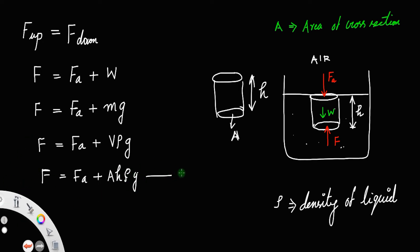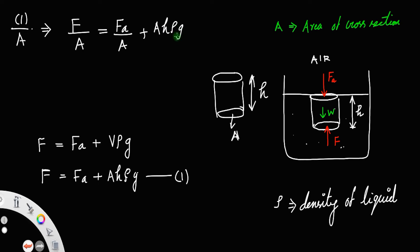Let us call that equation 1. Now divide equation 1 by the area of cross section. So F divided by A equals F_a divided by A plus A h rho g divided by A.